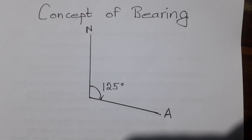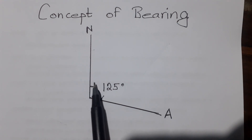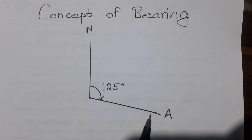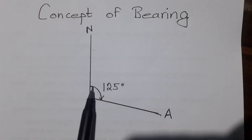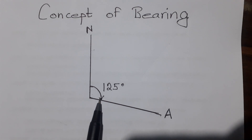It is a simple way to make the concept of bearing. The concept of bearing is very simple. For example, we can see a North line. We can make a point A. The North line is at 1.25 degrees — that is, the point is positioned at 125 degrees from the North line.